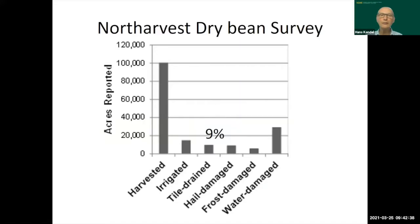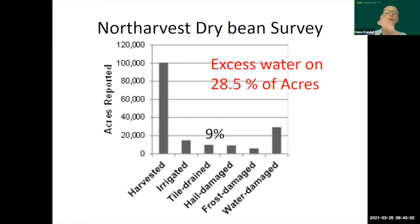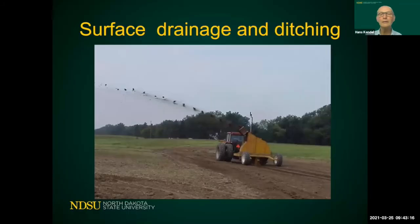We know from experience looking at yield maps that tile has a big effect. I'm always surprised when I talk with growers using dry bean production. We asked them how many percent of their beans are tiled — they said about nine percent. Then I asked how many farmers had an issue with excess water, and they said maybe 28 percent of the acres had excess water that particular year we surveyed. So if you have excess water, one of the ways to address it is with tile.